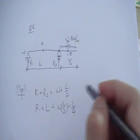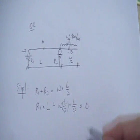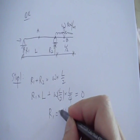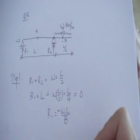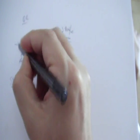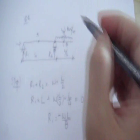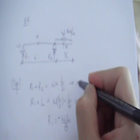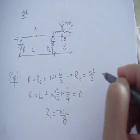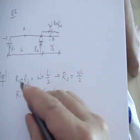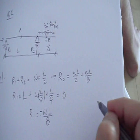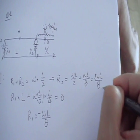They are in the same direction, so you add these two and they should equal zero. So R1 is simply negative WL over 8. Negative means the reaction force there actually should be going down rather than going up. From the first equation, R2 is WL over 2 minus R1, so it's positive 5WL over 8.